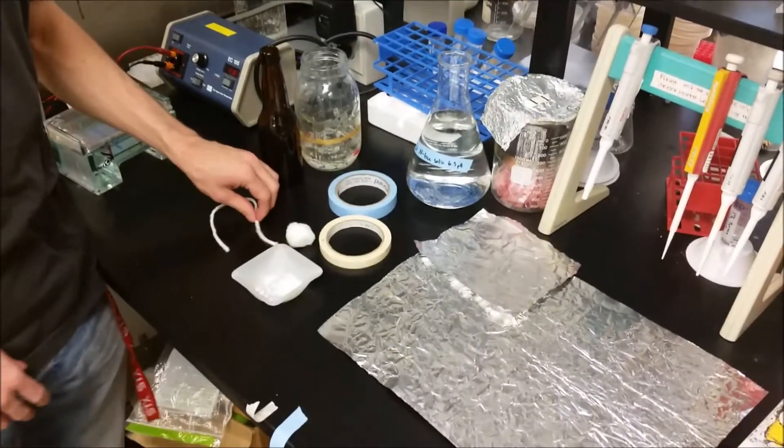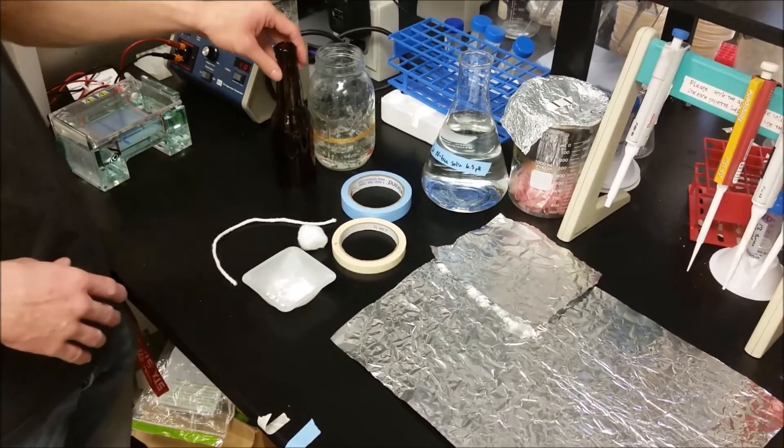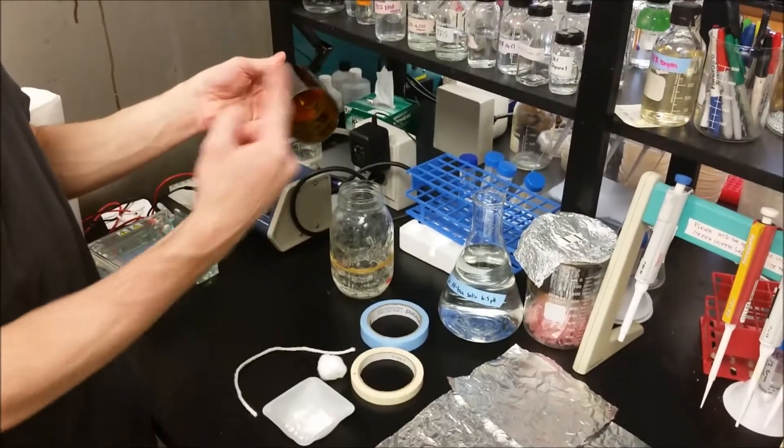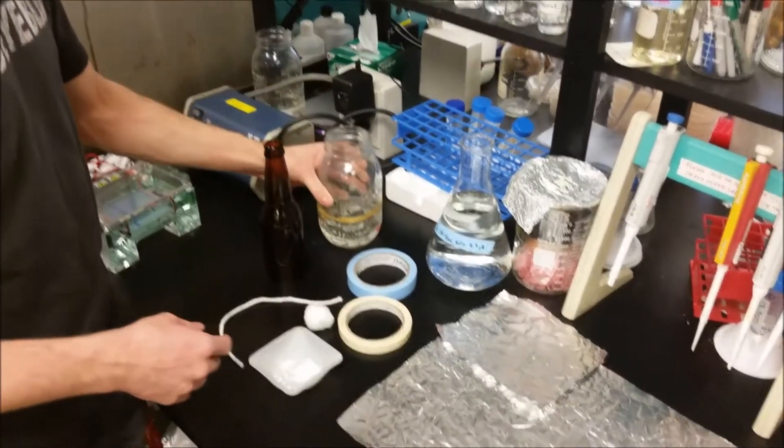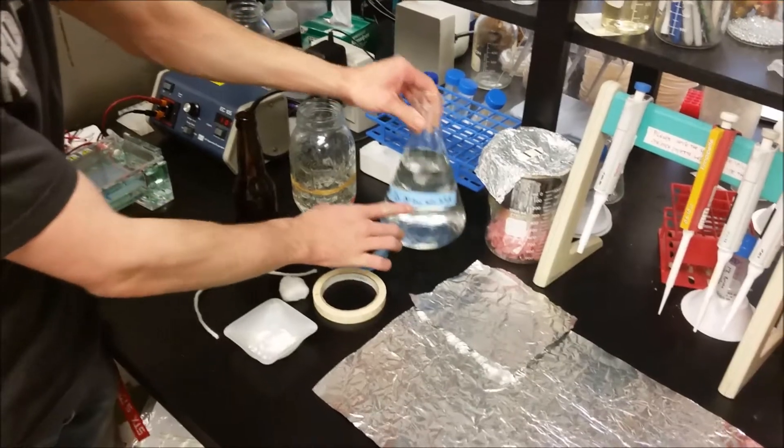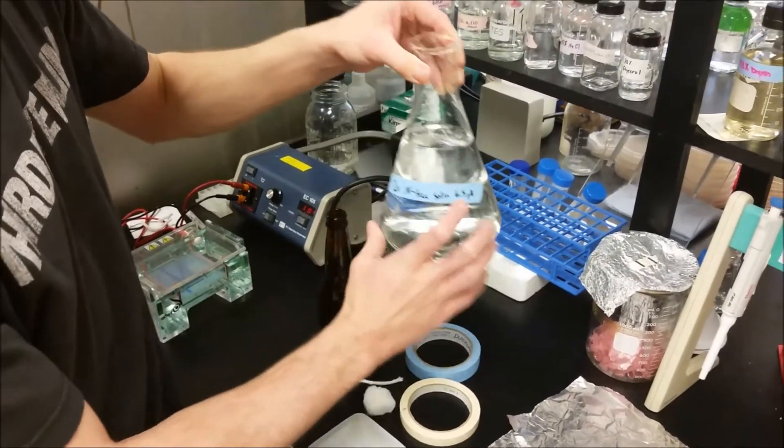Hey guys, so today we're making a Leonard jar. Basically what we have together right now is all our ingredients. We have a beer bottle that is missing the bottom, a mason jar, our one times nitrogen free watering solution pH to 6.5.